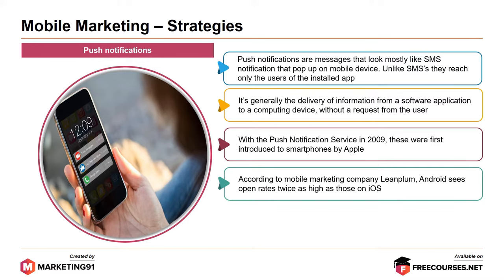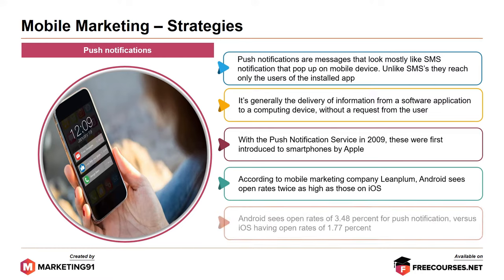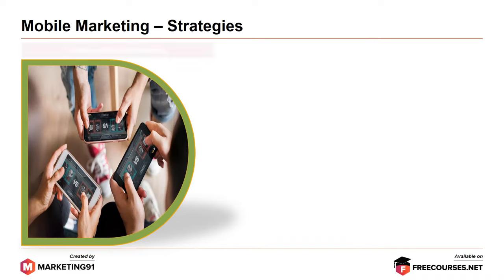According to mobile marketing company Leanplum, Android sees open rates twice as those on iOS. Android sees open rates of 3.48% for push notifications versus iOS having open rates of 1.77%.